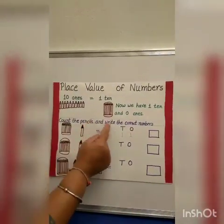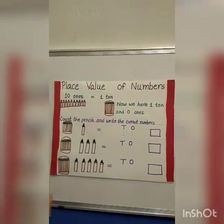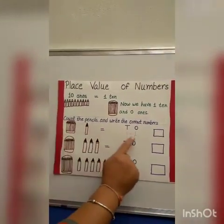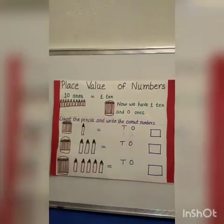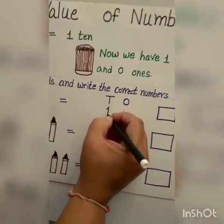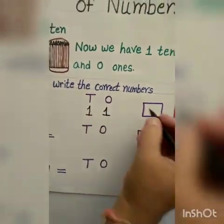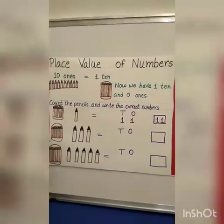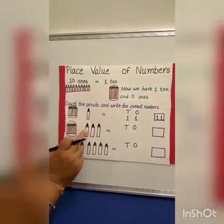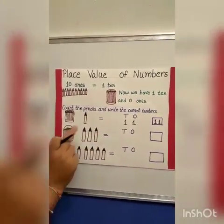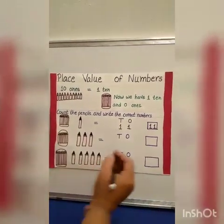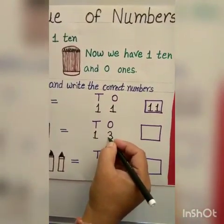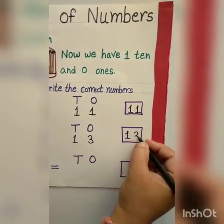Now count the pencils and write the correct numbers. So 1 ten and 1 one is equal to 11. 10 plus 1 is 11. So we will write here 11. And here also we have to write 11. Next again 1 ten, and how many extra pencils? 1, 2, 3. That means 10 plus 3 is 13. So we have to write here 13. In the box also 13.